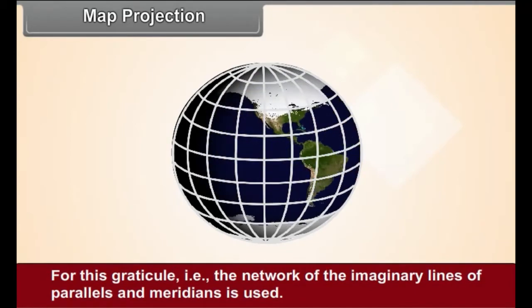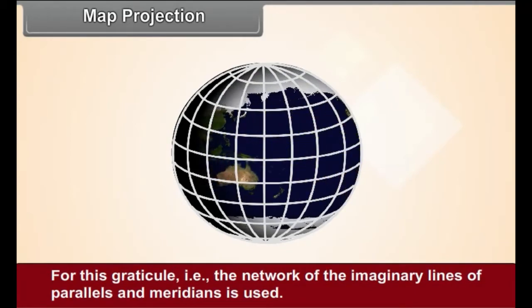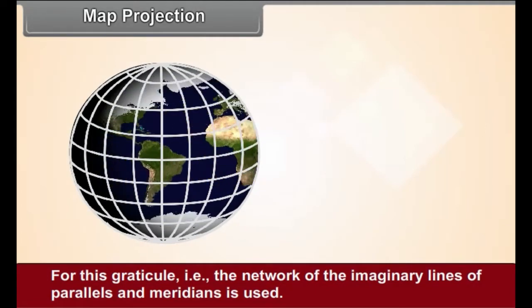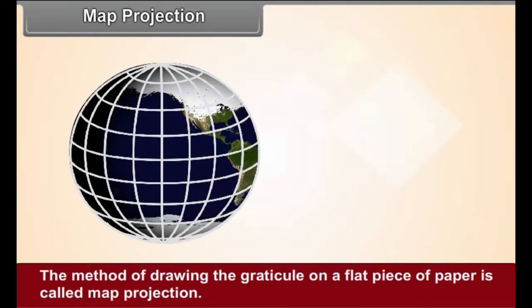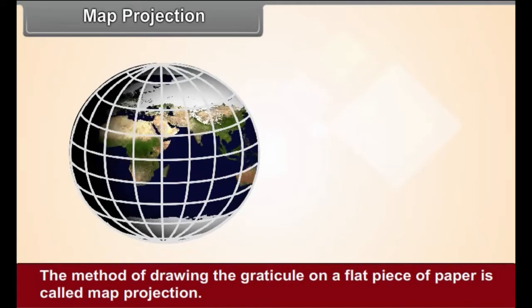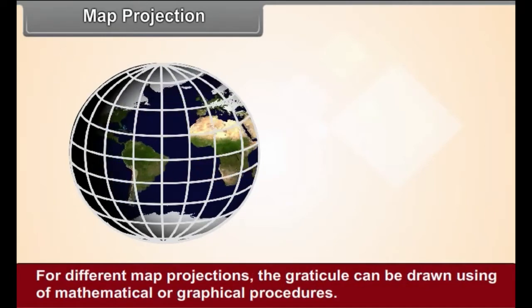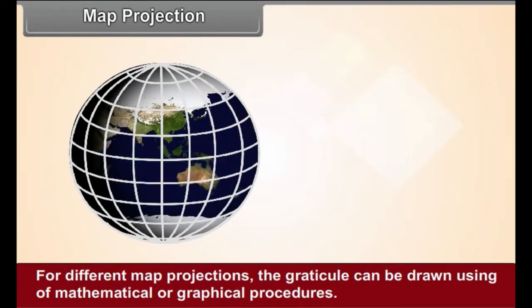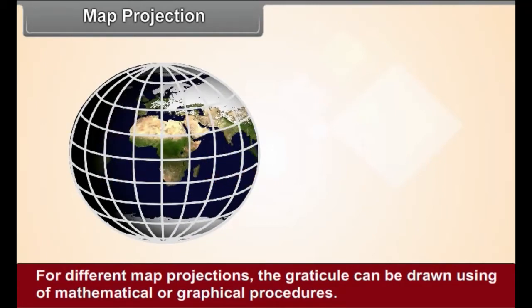For this, the graticule, i.e., the network of the imaginary lines of parallels and meridians is used. The method of drawing the graticule on a flat piece of paper is called map projection. For different map projections, the graticule can be drawn using mathematical or graphical procedures.